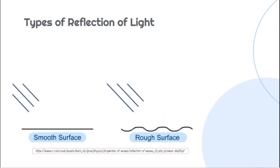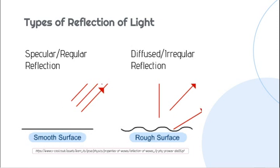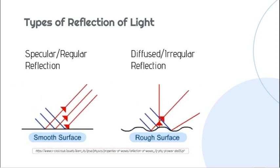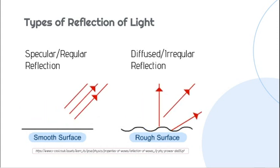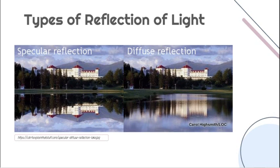We have two types of reflection of light: specular or regular reflection, which happens on a smooth surface, and diffuse or irregular reflection, which happens on a rough surface. Reflection on a smooth surface follows a certain path, while reflection on a rough surface tends to move in different directions. Specular reflection gives a clear image of the object, while diffuse reflection gives a blurry image, as seen here with the trees and building.